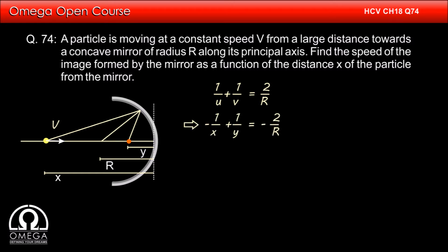Putting the values, we get minus 1 by x plus 1 by y is equal to minus 2 by r. Which implies 1 by y is equal to 2 by r minus 1 by x, or 1 by y is equal to 2x minus r divided by rx. Simplifying, we get y is equal to rx divided by 2x minus r.